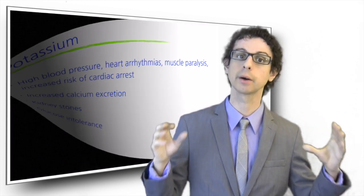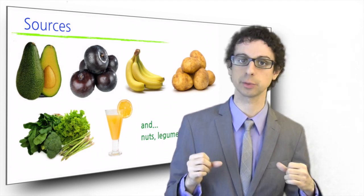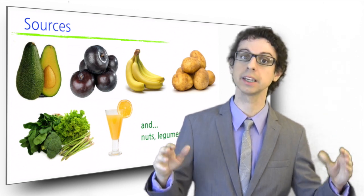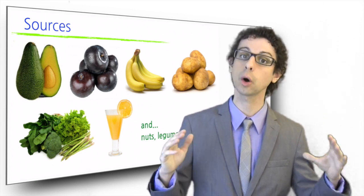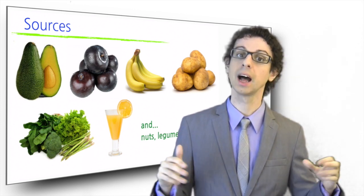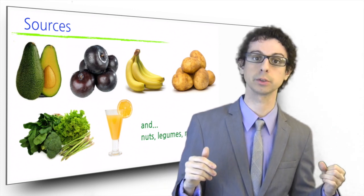Plant foods are our best sources of potassium, especially fruits and vegetables. Avocados, plums, bananas, potatoes eaten with the skin, green leafy vegetables and orange juice are some very good sources of potassium. Nuts, legumes, meat and dairy also significantly contribute to our needs.